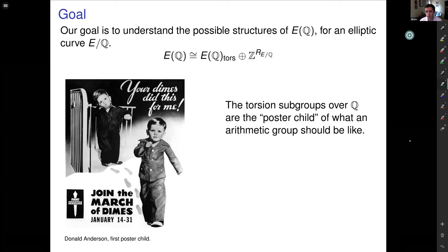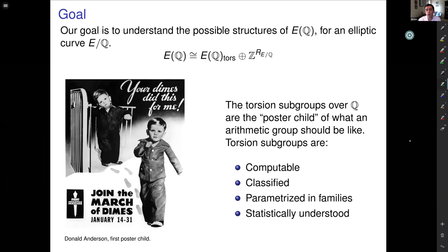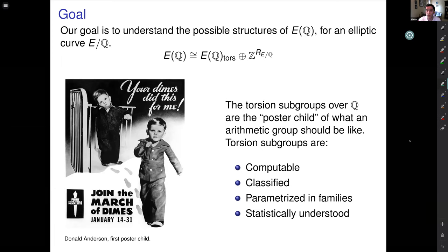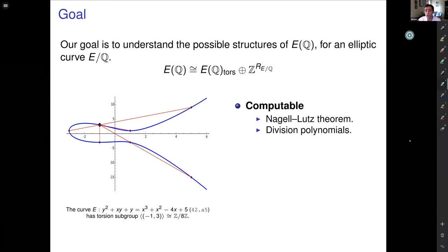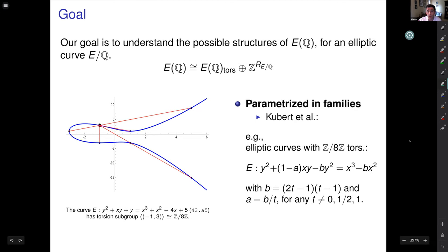The torsion subgroup is what I call the poster child of what an arithmetic group should be like. Over Q, there is a lot of research on torsion subgroups. We know how to compute torsion subgroups, we have a full classification over Q of what torsion subgroups are possible, we can parameterize them in families, and we know the statistics on torsion subgroups. The torsion subgroups are computable by the Nagell-Lutz theorem or using division polynomials. The famous Mazur's theorem tells you the 15 possibilities for torsion groups up to isomorphism. We know how to parameterize elliptic curves with a given torsion — for example, if you have an elliptic curve with a point of order 8.